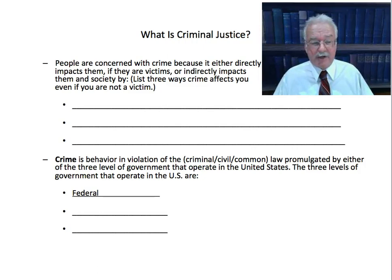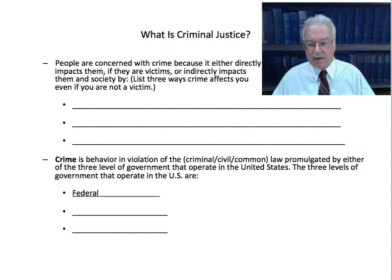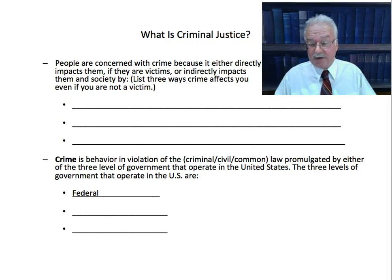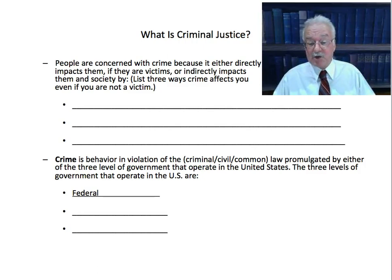The third way we are all indirectly crime victims is that through our taxes — sales tax, personal income tax, property tax — we all have to pay the cost to maintain the criminal justice system. We have to pay for police, courts, prisons, jails, probation departments, corrections departments, the buildings, the employees, the supplies, and this is a significant cost to the taxpayer. So those are three ways that people are victimized by crime even though they're not the actual victim of the crime.